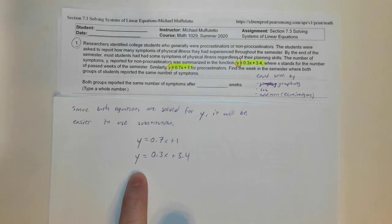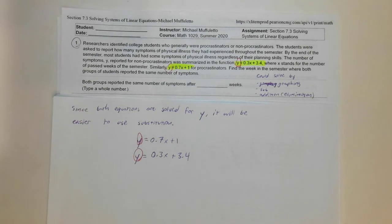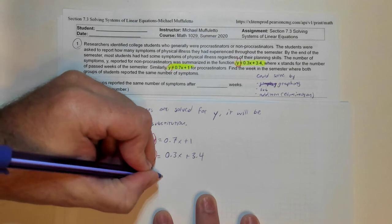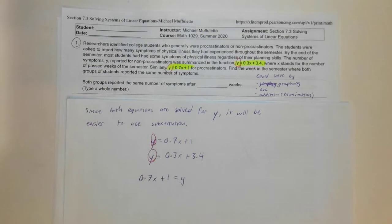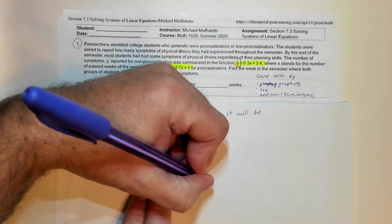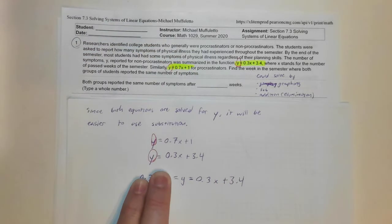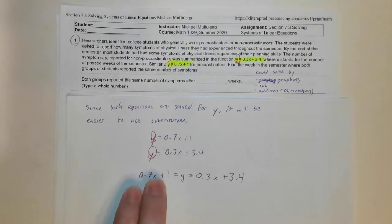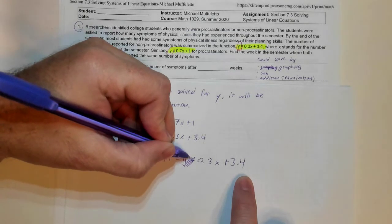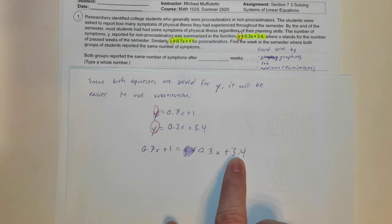Y equals 0.7X plus 1 and Y equals 0.3X plus 3.4. So since these are the same Y, I can set these equal to each other. 0.7X plus 1 is equal to Y, and at the same time Y is equal to 0.3X plus 3.4. So it holds true that those are equal. I don't really need this Y in the middle. Now I have an equation of just X.